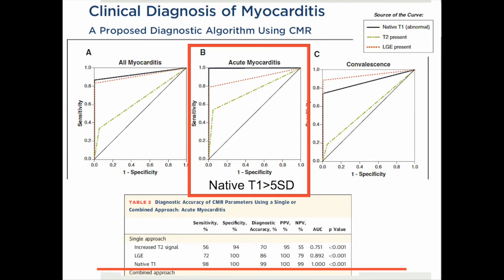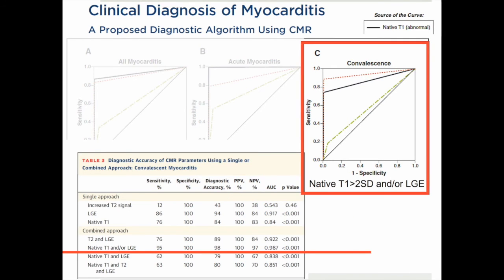These observations led us to propose a new diagnostic algorithm for clinical diagnosis of myocarditis, employing distinctively different algorithms for acute and chronic convalescent myocarditis. In prospective validation, native T1 of more than five standard deviations was able to virtually identify all cases of acute myocarditis, whereas chronic myocarditis or convalescence were best defined by a combination of abnormal native T1 and/or the presence of late gadolinium enhancement.